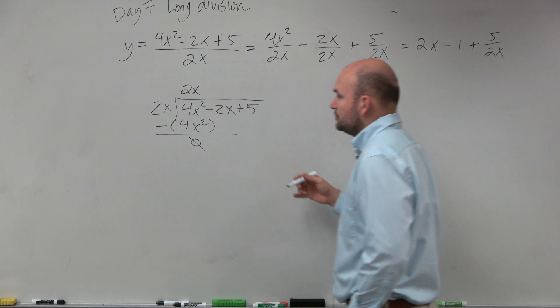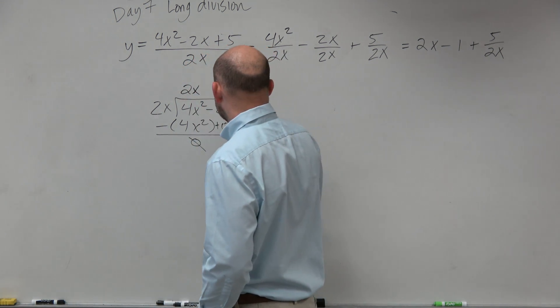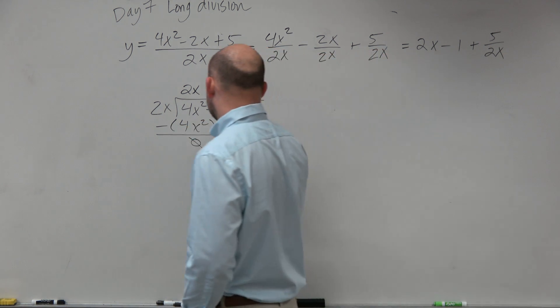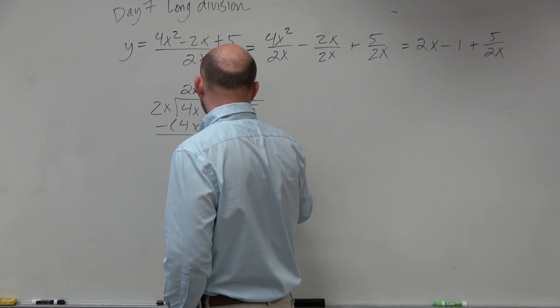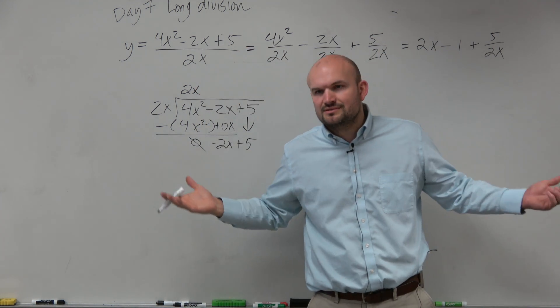Now, a couple of different things. You guys could use place values. You could say, well, there's nothing here, right? So you could say that's a 0x. So negative 2x minus 0x is obviously just negative 2x. Or, in algebra 2, sometimes we just use an arrow and say, just bring it down. Like,